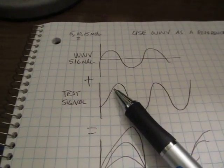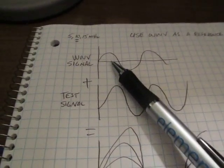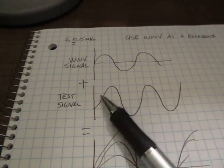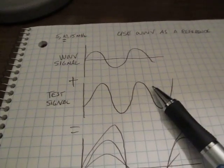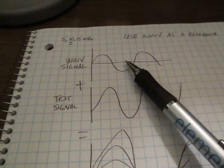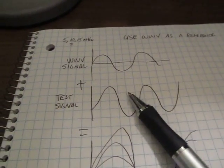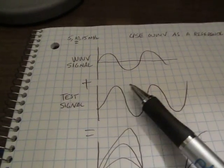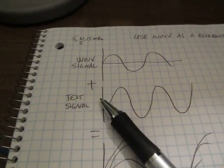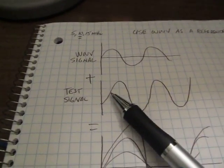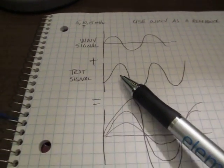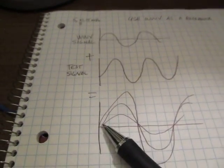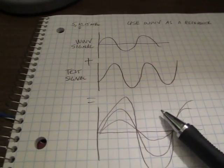If our test signal is very near 10 MHz and WWV is at 10 MHz, there might be a slight phase shift between them. Also, if there's a frequency difference, one signal would appear to walk very slowly relative to the other. For example, if they were off by one Hz, a peak would walk from one peak to the next once a second. If off by two Hz, it would slip two cycles a second. If you're off by less than one Hz, you'll slip less than one cycle per second.